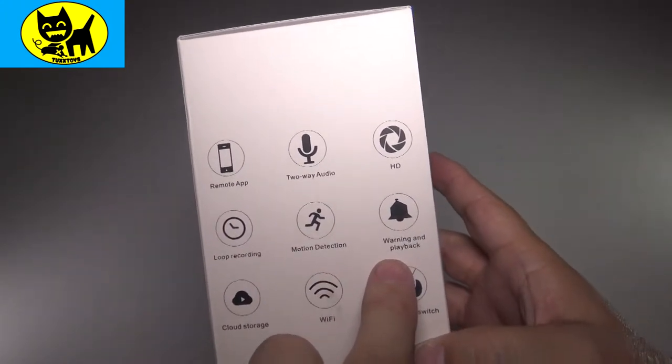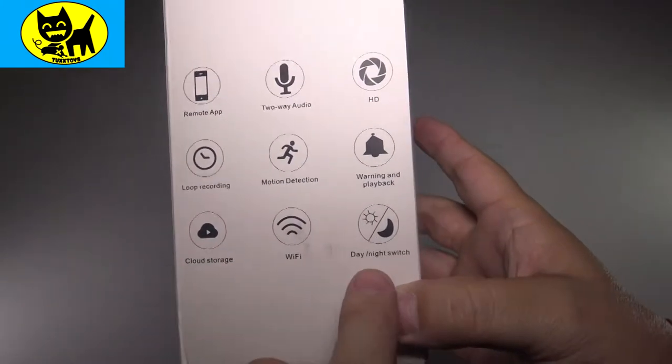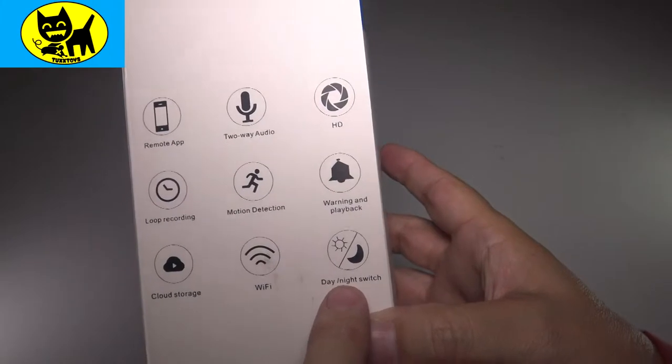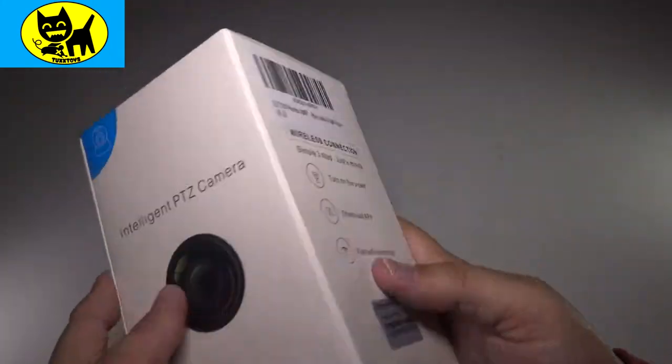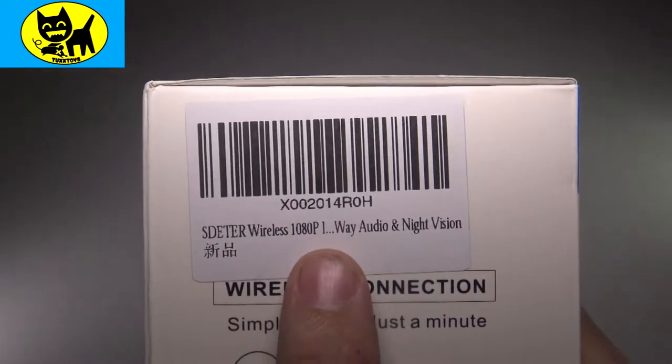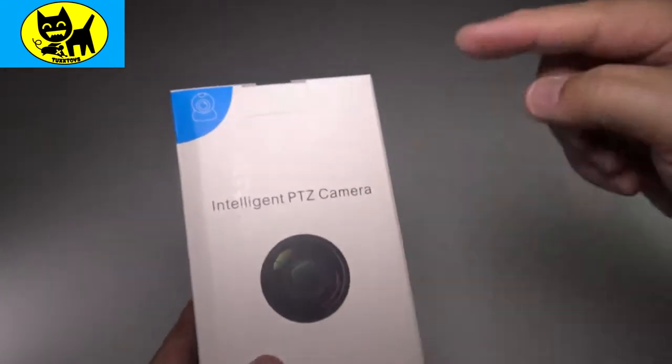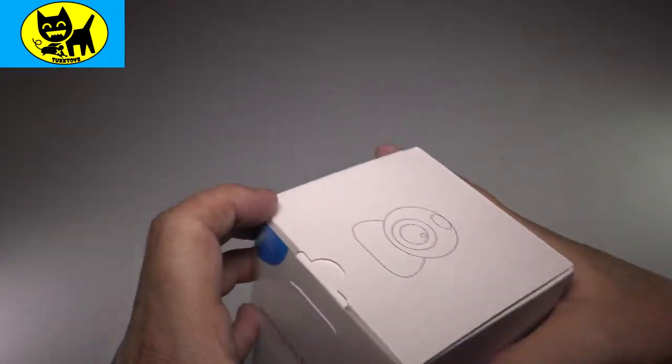It has motion detection. It has warning and playback. Cloud storage, very important. Wifi and day and night switch. So very cool stuff. And this is what looks like the packaging, very cool. Here's the barcode if you need to pause that you can, but I will have a link for you again in the description down below. And we'll go ahead and open this up and see what this is all about.